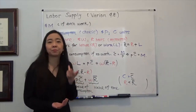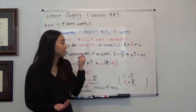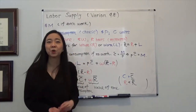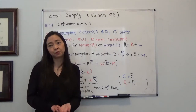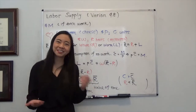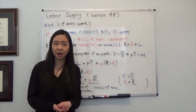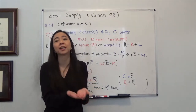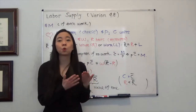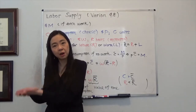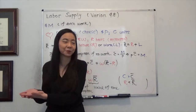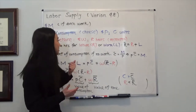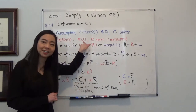You can think about this: the value of leisure per hour is actually your wage rate. Why is that? If you work for, say, Starbucks and they pay you $15 per hour, then for each hour you spend on leisure, that means you cannot work, meaning you will have to give up that $15 per hour. So the opportunity cost of leisure is exactly your wage rate.